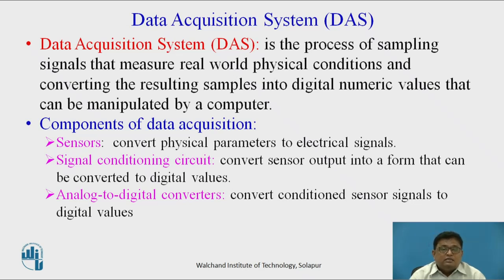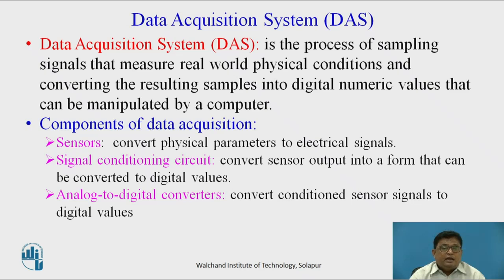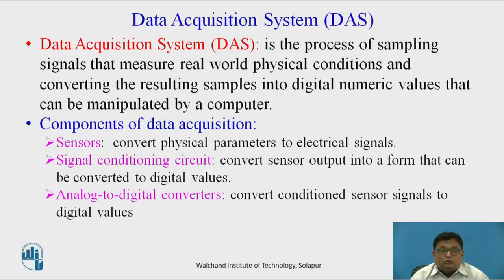Most of the time in the real world, different parameters need to be sensed — like temperature, pressure, humidity, displacement, movement of objects, and so on. These need to be converted into a suitable form, mostly into digital numeric values, so that a controller or computer can process them. The main components of a data acquisition system are sensors, the signal conditioning circuit, and the analog-to-digital converter.